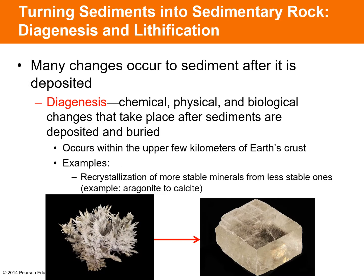Another change that occurs after sediment is deposited is diagenesis — the chemical, physical, and biological changes that take place after sediments are deposited and buried. This usually occurs within the upper few kilometers of Earth's crust. An example is the recrystallization of more stable minerals from less stable ones — for example, the mineral aragonite may recrystallize into calcite as part of diagenesis, which is why calcite is included in more sedimentary rocks than aragonite.